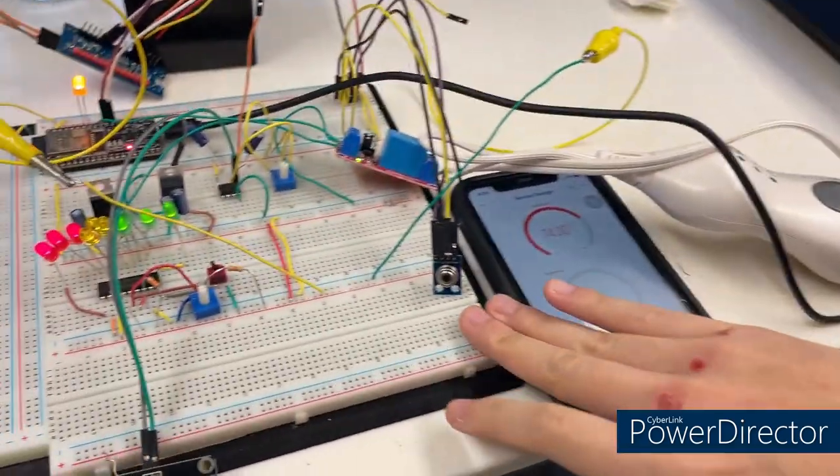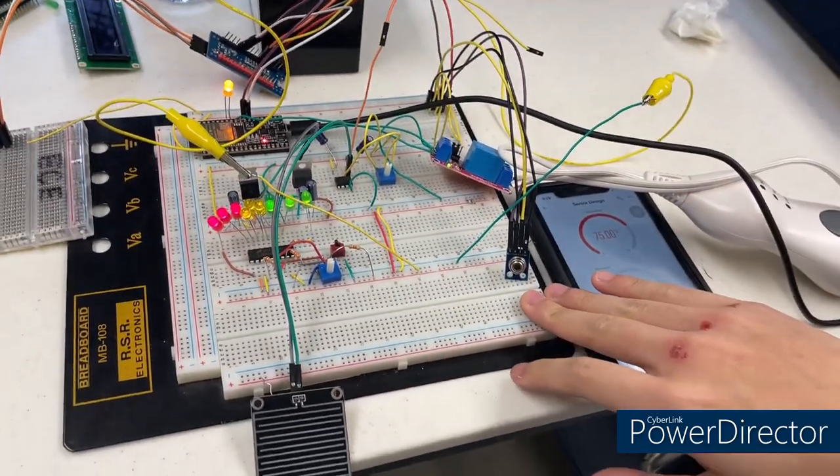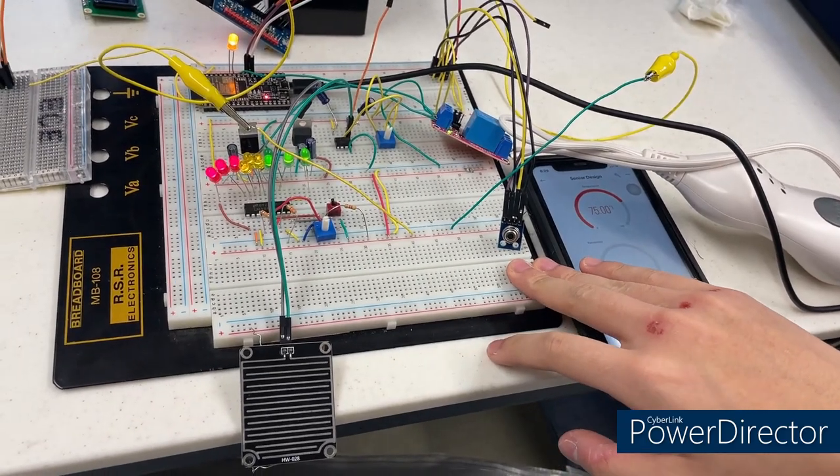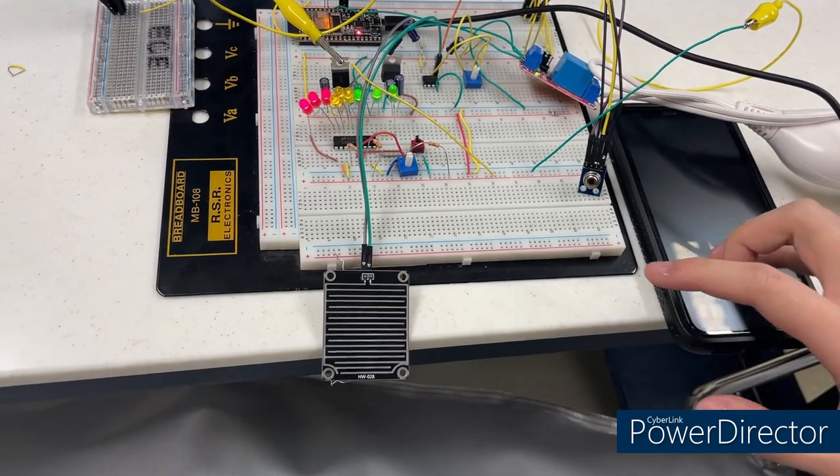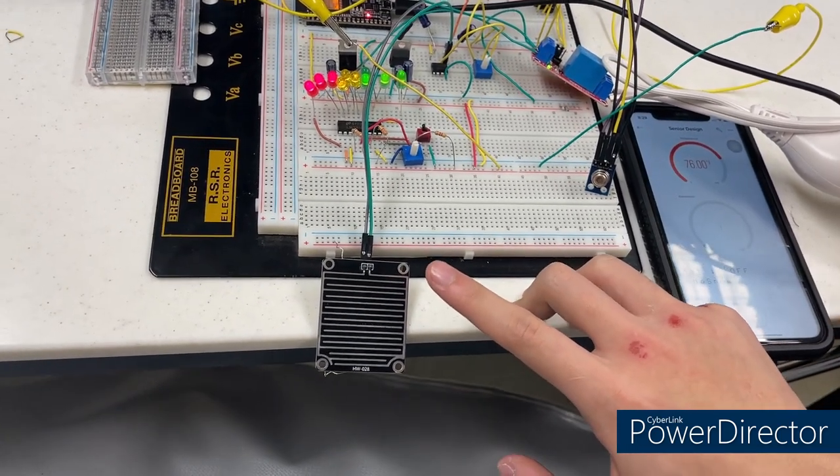Basically, when the temperature is lower than—for demonstration we set it to lower than 50 degrees Fahrenheit—and the rain sensor is 90% wet, we will turn on the system.